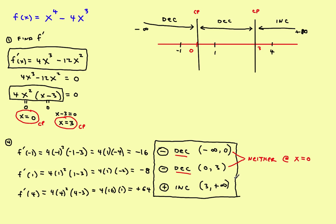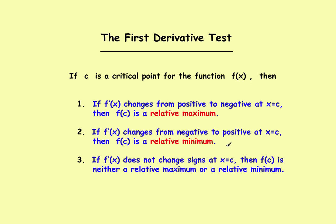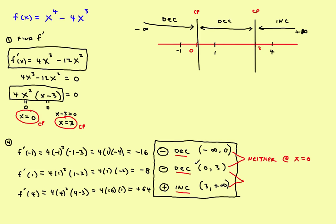Now at x equals 3, the function goes from decreasing to increasing. The first derivative test says that when it goes from decreasing to increasing — negative to positive — you must have a relative minimum. So there is a relative minimum at x equals 3.